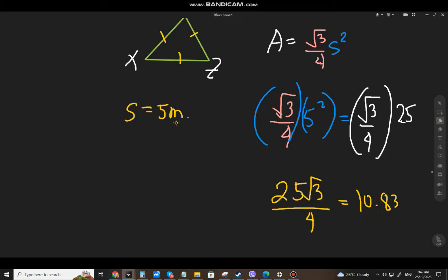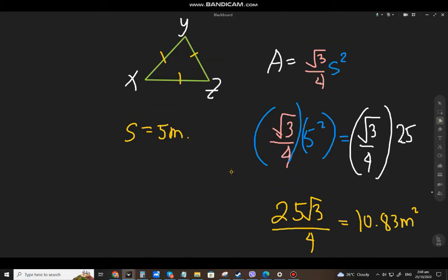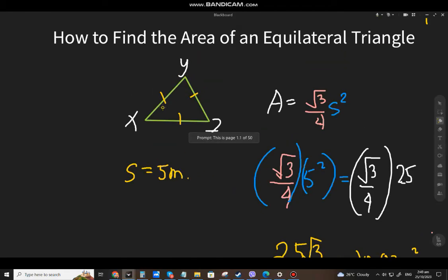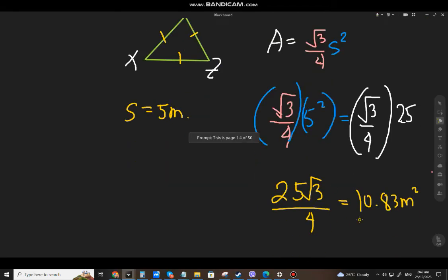So because it's meters, it's equal to meters squared. And if you look at the area, the units always have the exponent of 2, or it's square. So 10.83 square meters. So if you have a side of 5 meters on the equilateral triangle, its area is around 10.83 square meters.